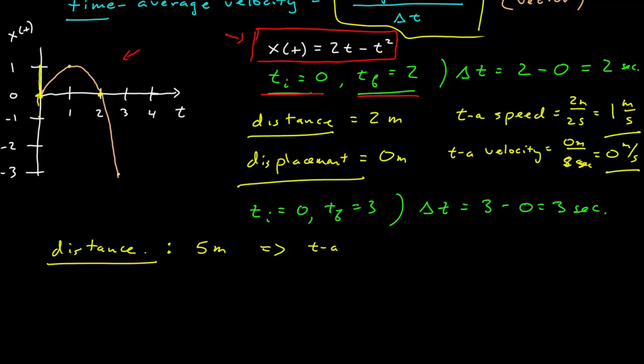So the time averaged speed is equal to the distance over the time interval, or 5 meters over 3 seconds, 1.67 meters per second. Scalar.